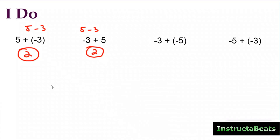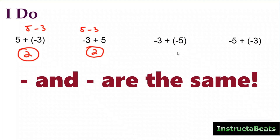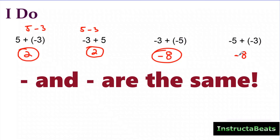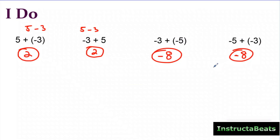Now: (–3) + (–5). Are they the same sign or different? Both add-ins are negative, so they have the same sign. That means I simply add the numbers as if they're positive: three plus five is eight. Then I keep the sign — both were negative — so my answer is negative eight. For (–5) + (–3), I just flipped them: five plus three is eight, both add-ins were negative, so I leave my answer as negative eight.